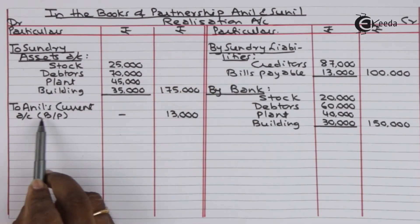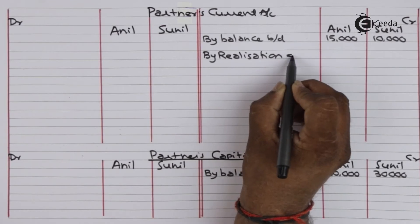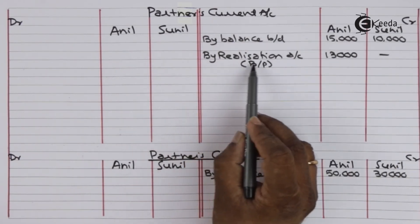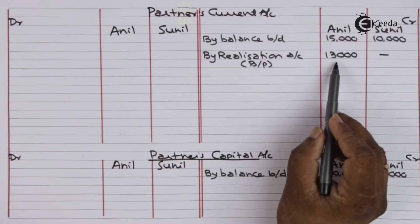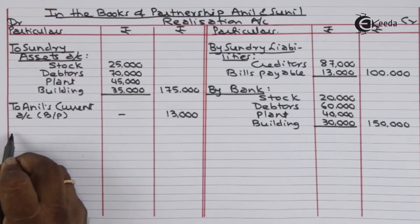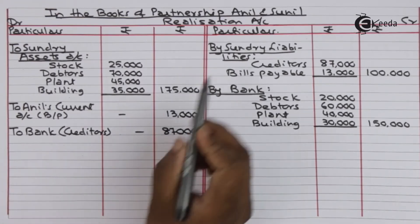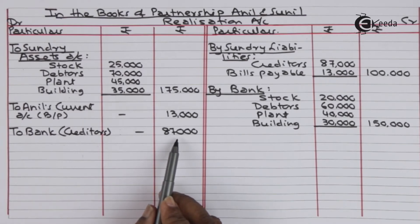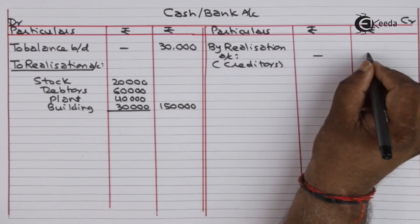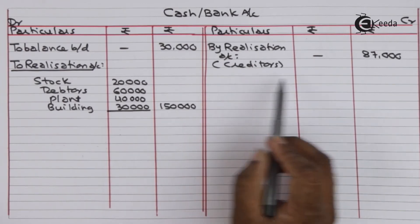Realization account debit — to Anil's current account for bills payable taken over — 13,000. In the partners' current account: Anil — by realization account — bills payable taken over — 13,000. Creditors were paid in full — 87,000 — this will be recorded to the debit of the realization account. Realization account debit — to bank for creditors paid — 87,000. Cash bank account credit — by realization account for creditors paid — 87,000.